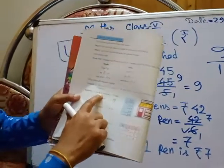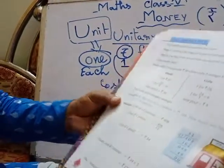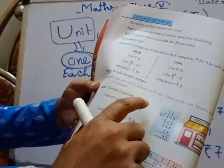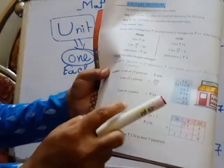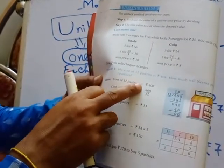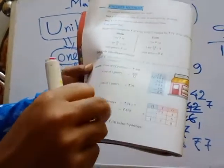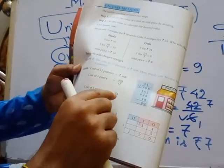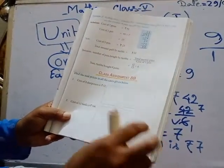Here is an example: the cost of 12 pasties is 408 rupees. The cost of 1 pasty equals 408 divided by 12. We write 408 as the numerator and 12 as the denominator. After calculating, the cost of 1 pasty is ₹34.